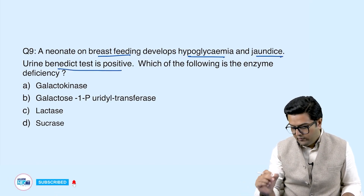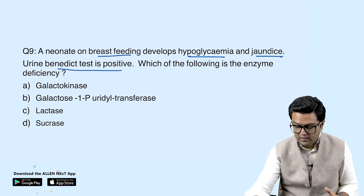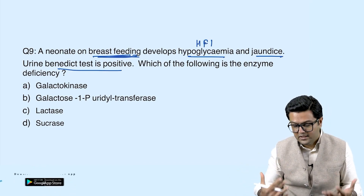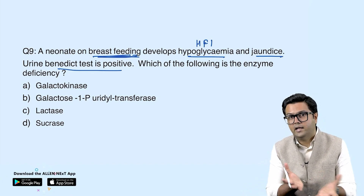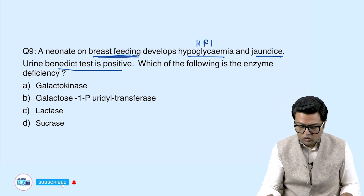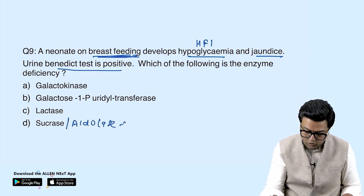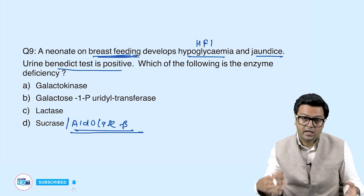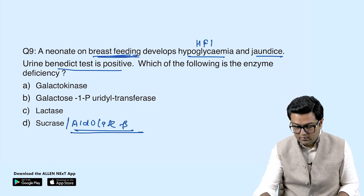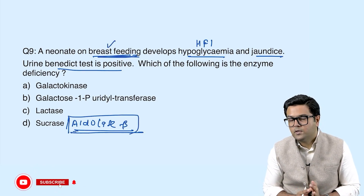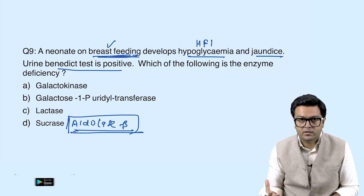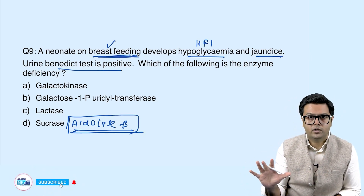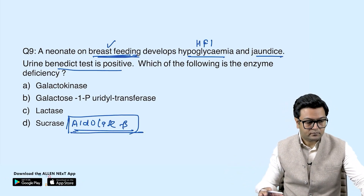When hypoglycemia is present we generally think of hereditary fructose intolerance (HFI), not galactosemia — but in a breastfeeding child with no history of fruit juices, galactosemia is the answer. Aldolase B deficiency (HFI) typically presents after 6 months when the baby starts consuming fruit juices. The exam question will always give a clear history.